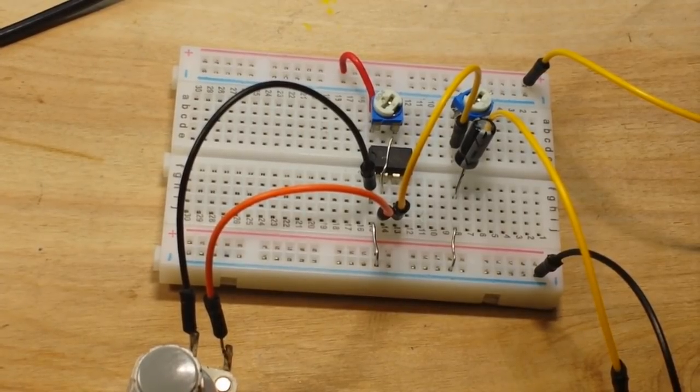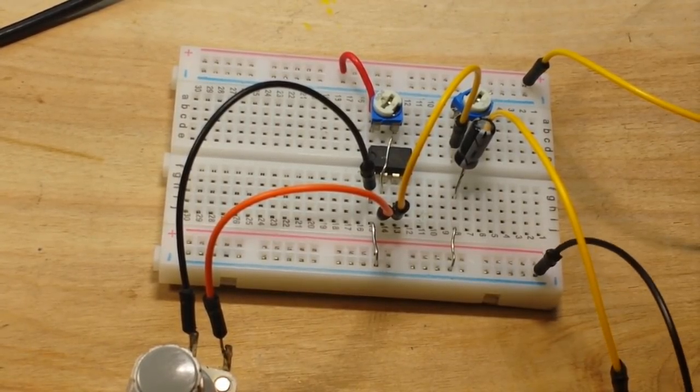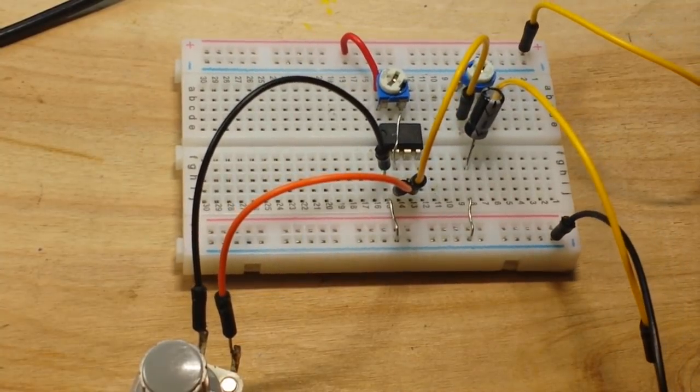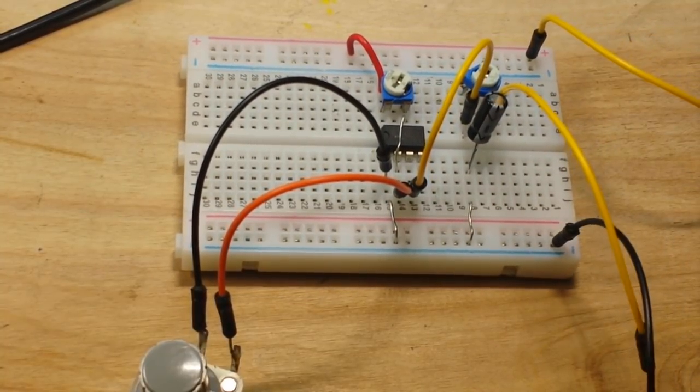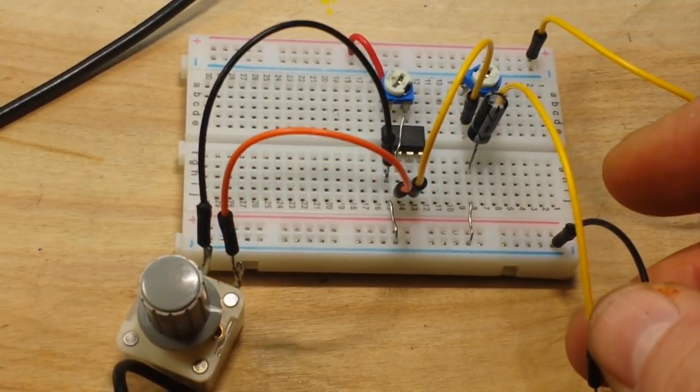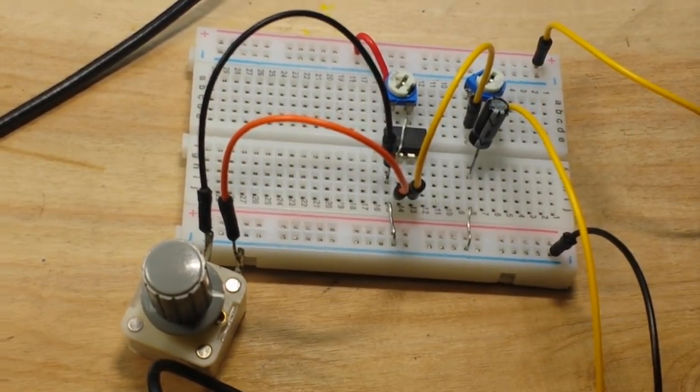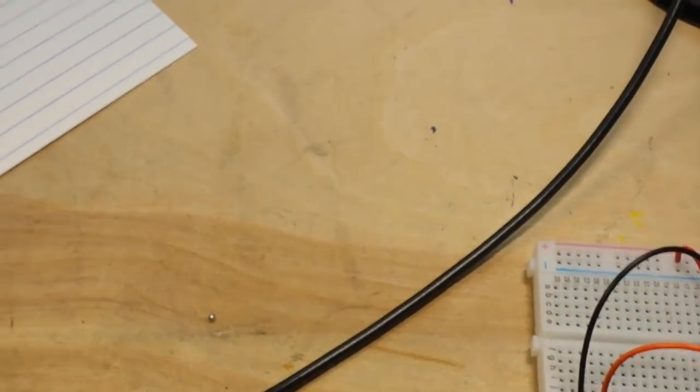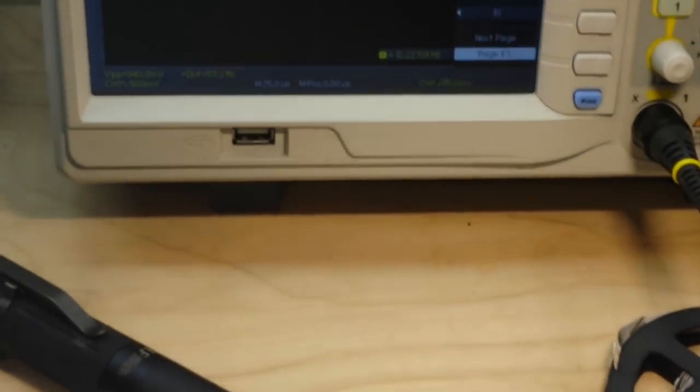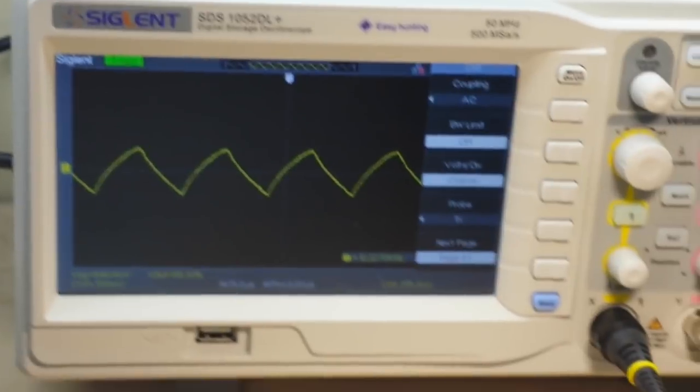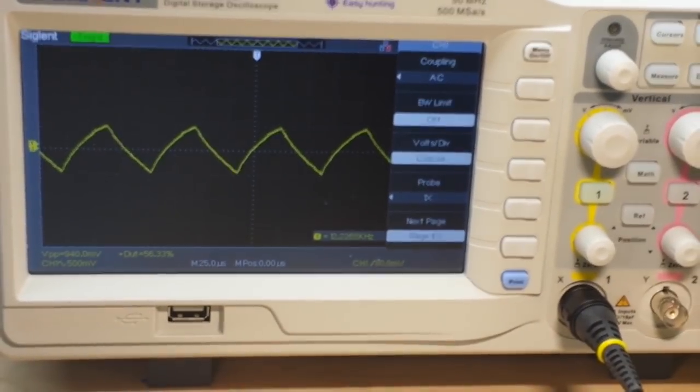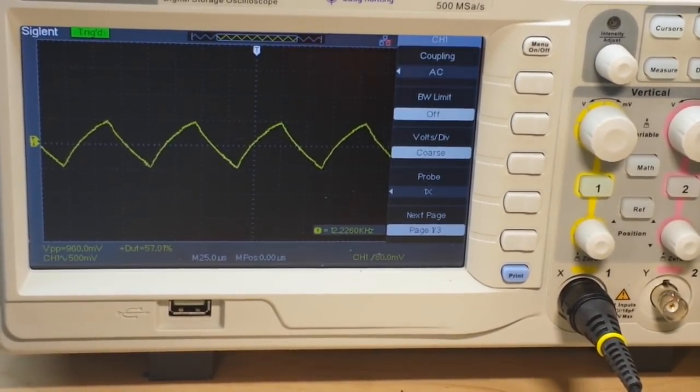Okay. Attach the scope here to our output. Ground first. Then our lead. And let's go over and look up at the scope. I'm doing this in one continuous movement so people don't say I cheat.